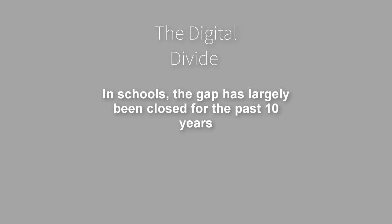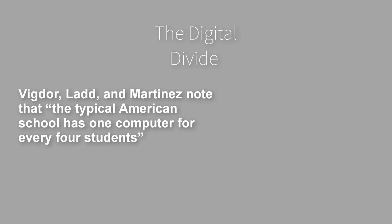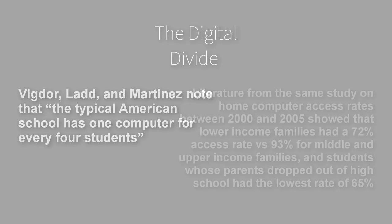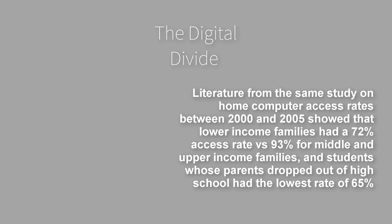Currently in schools, the gap has largely been closed for the past 10 years. Victor, Ladd, and Martinez note that the typical American school has one computer for every four students. Literature from that same study on home computer access rates between 2000 and 2005 showed that lower-income families had a 72% access rate versus 93% for middle and upper-income families. And students whose parents dropped out of high school had the lowest rate of 65%.